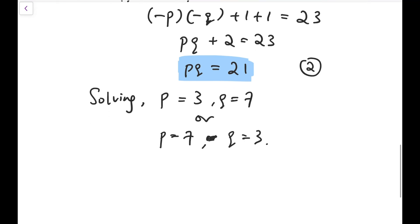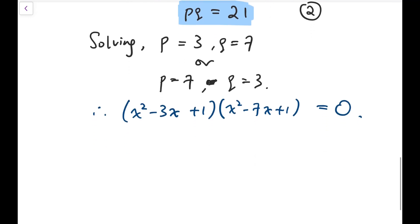But that's not important, because from this we can quickly say that our original equation becomes x squared minus 3x plus 1 times x squared minus 7x plus 1 equals 0. And so we can solve for each quadratic. We can solve them separately. And for that, we only require the quadratic formula.